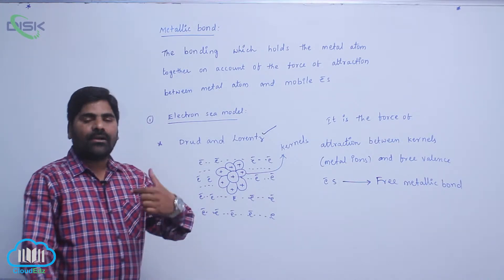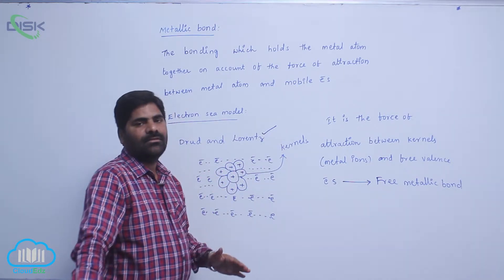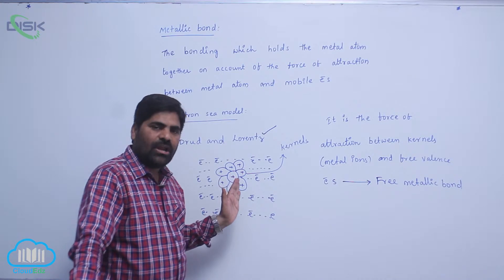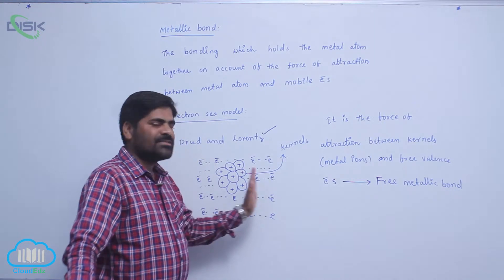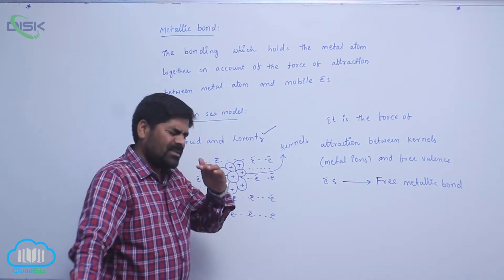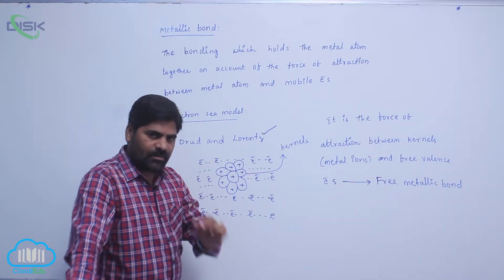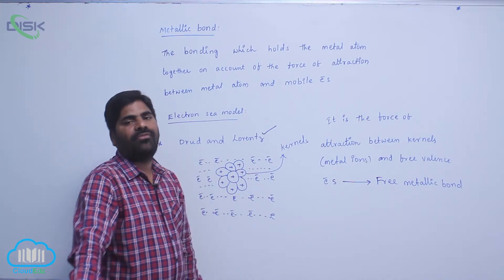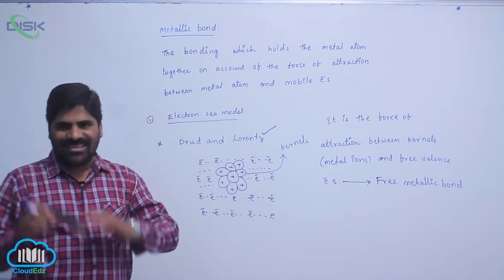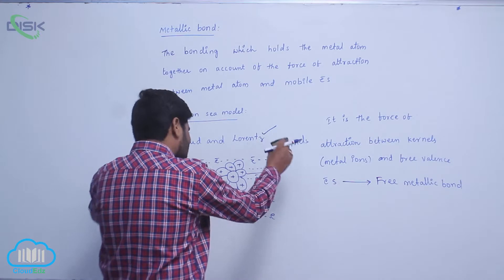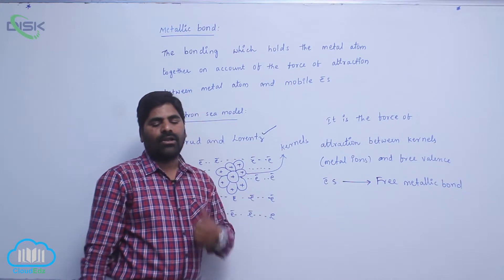The attractive force between metal atoms or metal ions and electrons of the valence shell of a metal — that is, the force of attraction between valence electrons and metal atoms in a metallic lattice — this particular bond is known as the metallic bond.